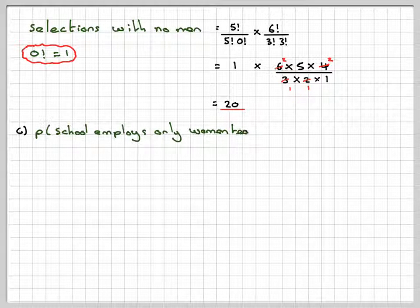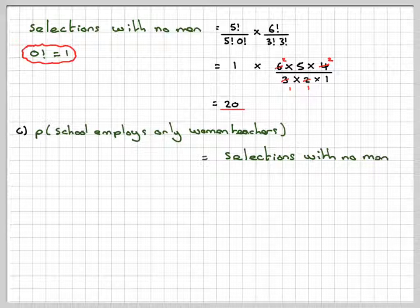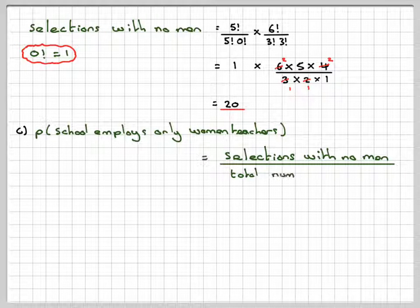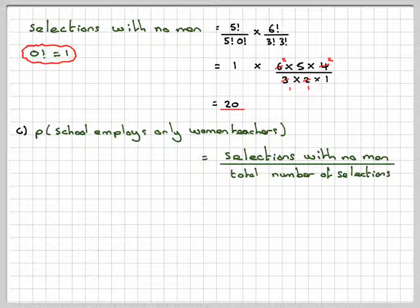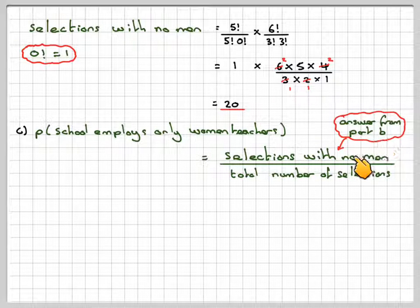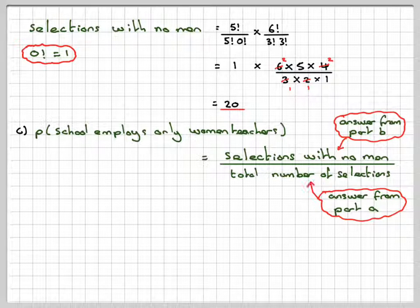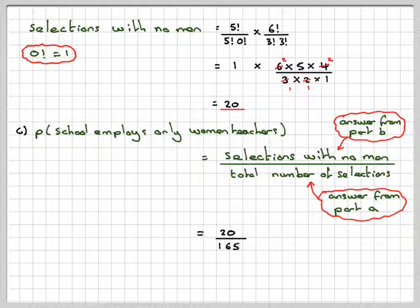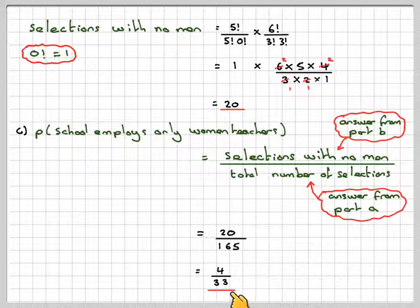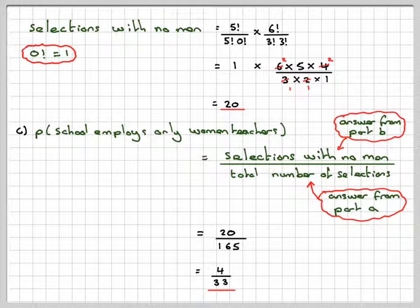Probability the school employs only women is going to be the selections with no men divided by the total number of selections. Therefore, selections with no men is the answer from part B, which is 20. And the total number of selections is from part A, which is 165. So that's 20 divided by 165. 5 goes into both 20 and 165, giving us 4 over 33 as the final answer.